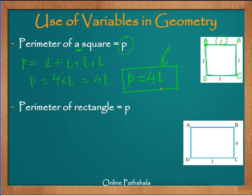Depending on the value of l, the perimeter will be given a number. For example, if l is 4, then the perimeter p is going to be 16 square units, whatever unit of length you are considering.